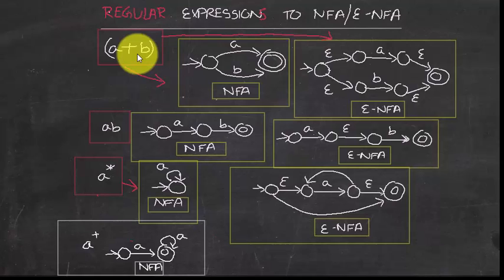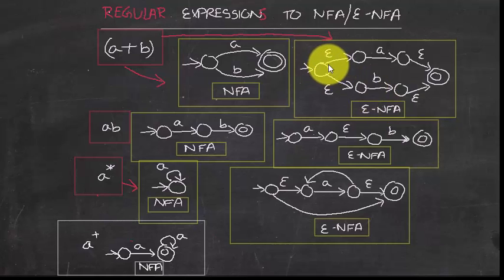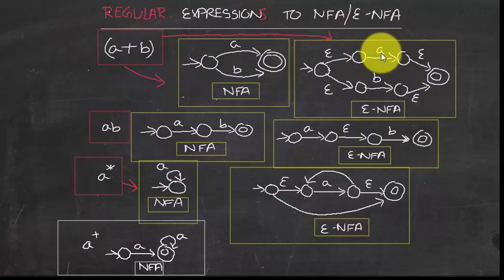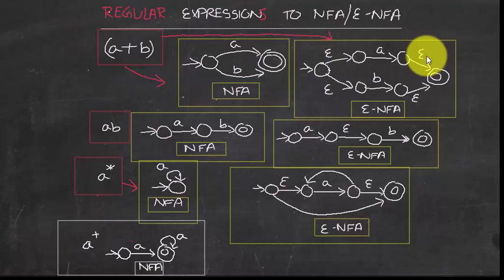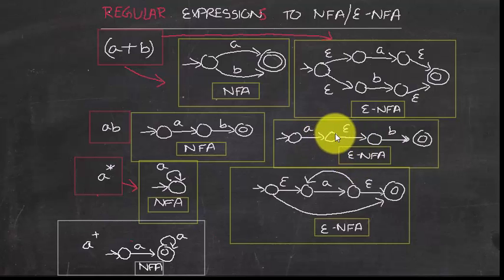If you are asked to convert a regular expression to an epsilon-NFA, epsilon transitions are allowed and do not consume any input — the automaton can still move to the next state without consuming input. You always put an epsilon transition before and after each component; these are strict rules following Thompson's algorithm.